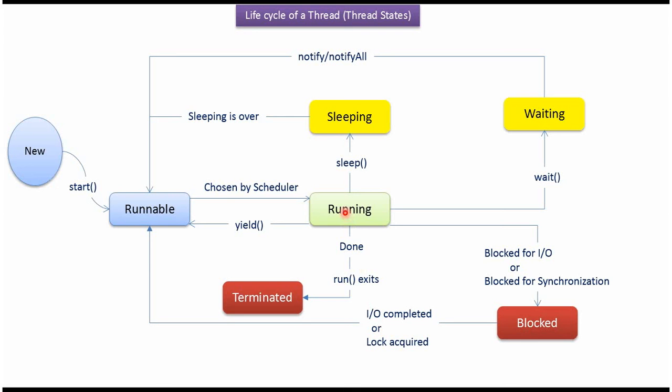From running state, a thread can go to terminated state if the run method exits or the run method completes successfully.